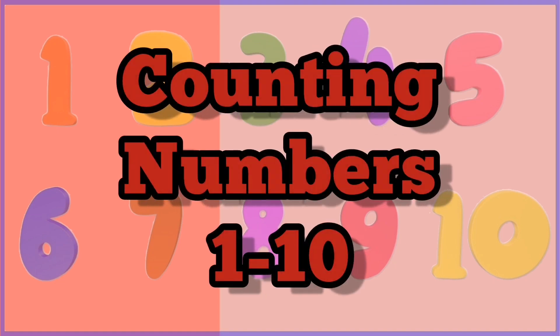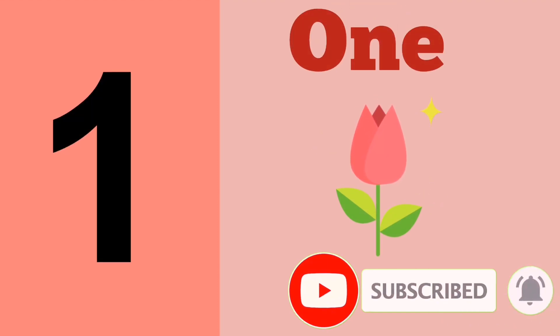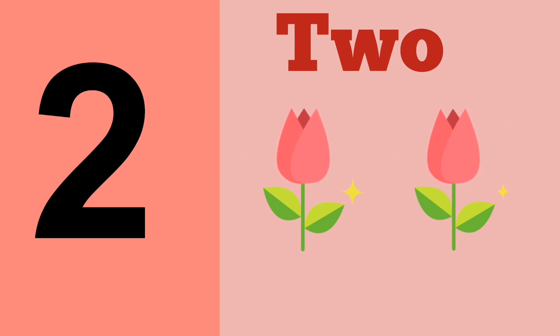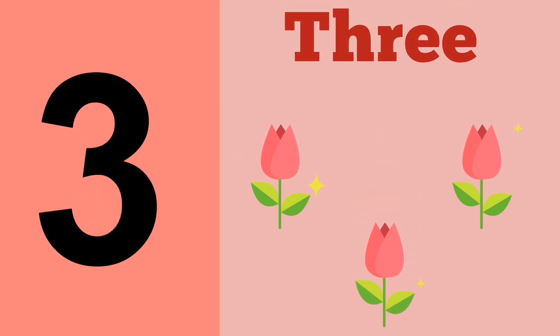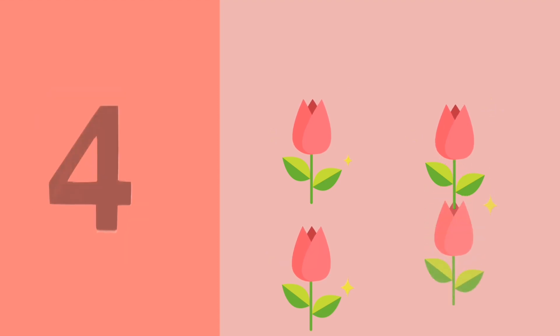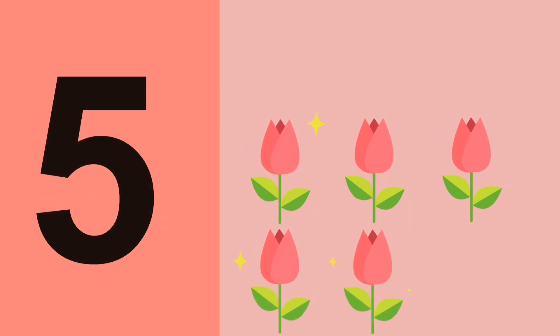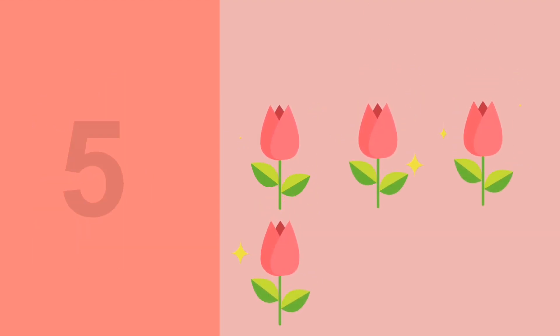Counting Numbers 1 to 10. 1 — O-N-E — 1 flower. 2 — T-W-O — 2 flowers. 3 — T-H-R-E-E — 3 flowers. 4 — F-O-U-R — 4 flowers. 5 — F-I-V-E — 5 flowers.